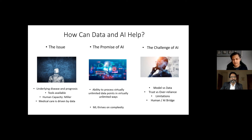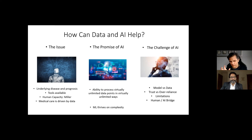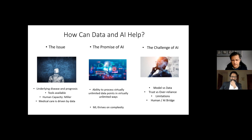Of course there are challenges. The running joke is that the intelligence part of AI is currently that of an eight-year-old — not very impressive. But if this is an eight-year-old that never forgets anything and can process things within milliseconds, that eight-year-old becomes a lot more effective. Eight-year-olds need guidance and direction, and that's one of the challenges with AI. We also have to think about what data you use to build models, trust, over-reliance, biases in AI algorithms, and the human-AI bridge.